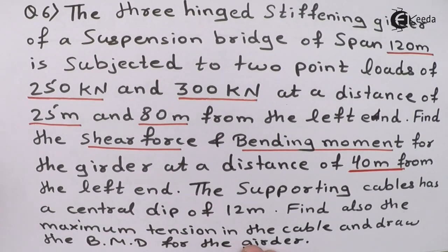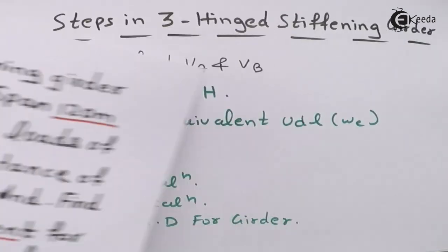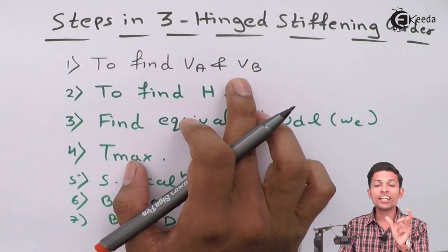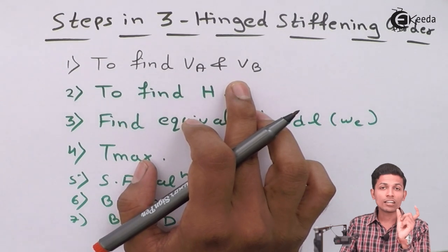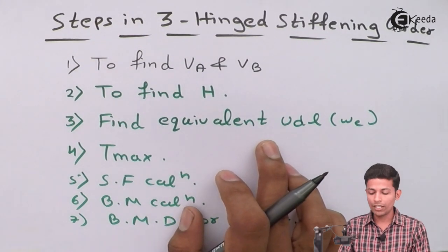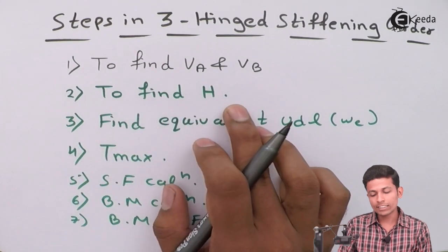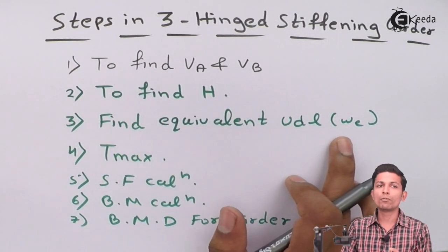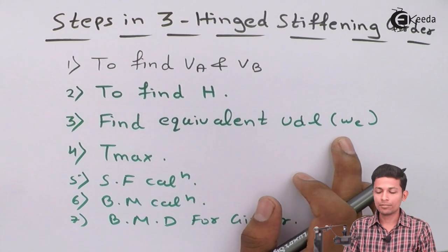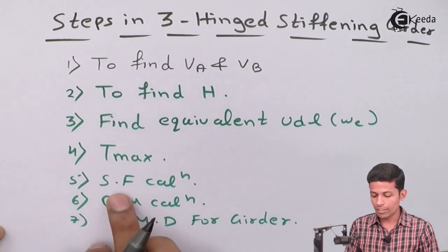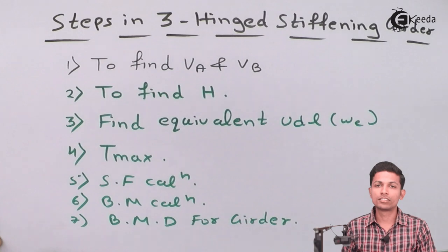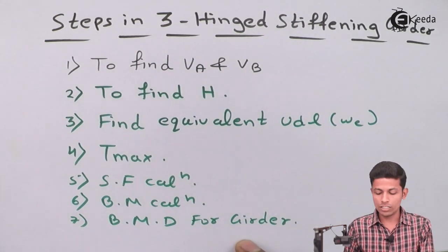Now let's see the steps we follow in this type of problem. Step 1: Find VA and VB, considering the stiffening girder as a simply supported beam. Step 2: Find H. Step 3: Find the equivalent UDL, denoted as WE. In cables, there is an overall UDL because of the nature of the cable. Step 4: Find T-max. Step 5: Shear force calculation at 40 meters. Step 6: Bending moment calculation at 40 meters. Step 7: Bending moment diagram for the girder. These are the steps we follow for all problems of this type.